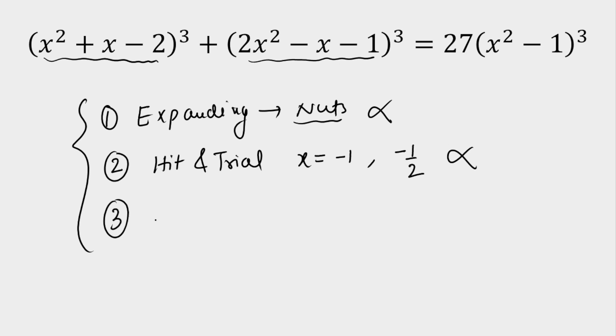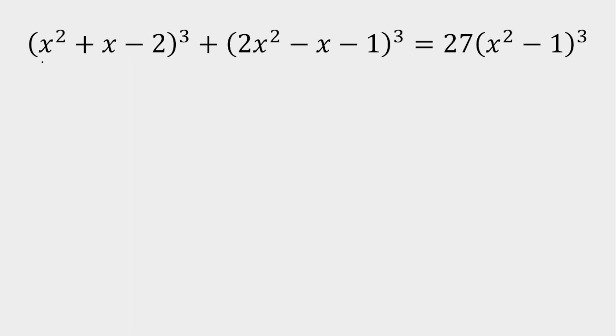Now the third method is an observational approach. For this kind of question, you have to open your eyes and observe. Let me show you. Let's say this number equals u, so this is u³. And let's say this number equals v, so this is v³.